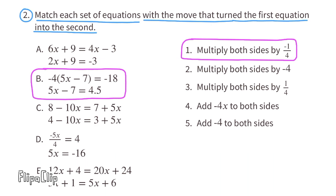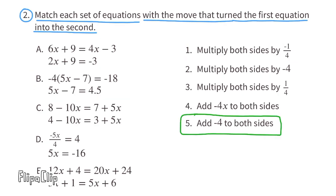Let's take a look at the equations for C. Starts out as 8 minus 10x, and then it becomes 4 minus 10x. So it looks to me like they just subtracted 4, and subtracting 4 is the same as adding a negative 4. And look at the right side of the equals sign. 7 minus 4 is 3. So the moves for number 5 match up with the equations for C.